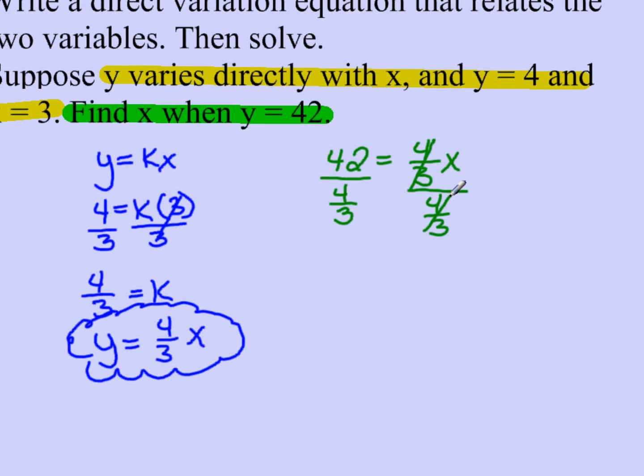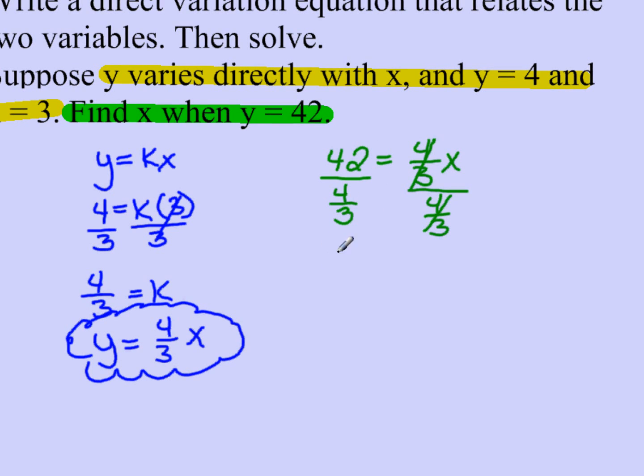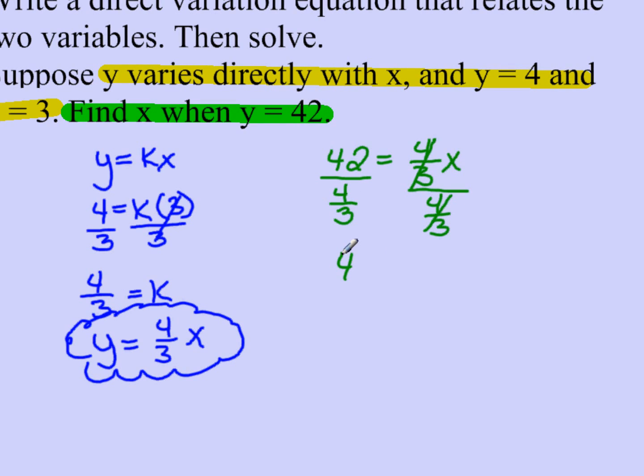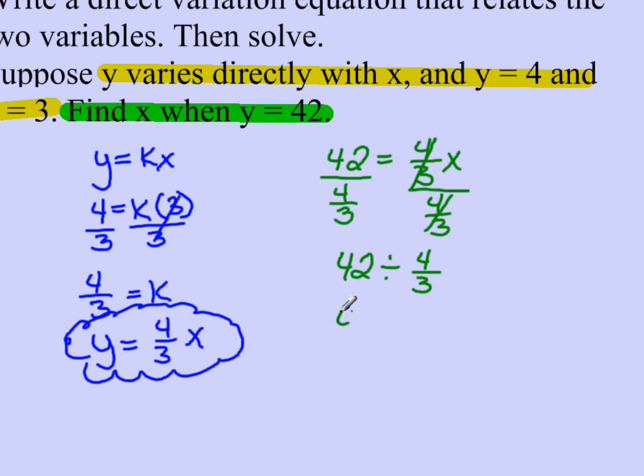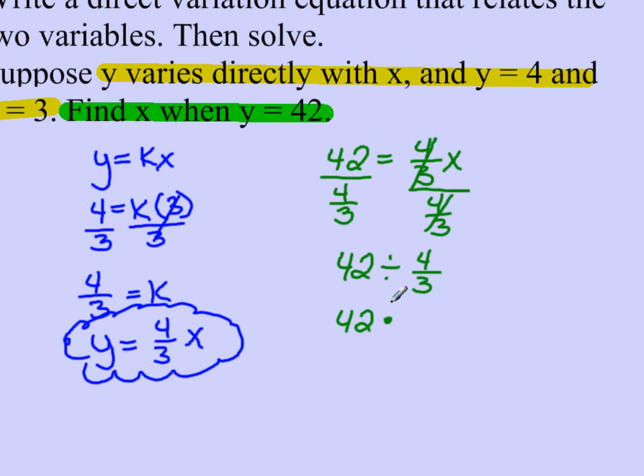Now I have a fraction. I'm dividing with a fraction, so this is where I can rewrite it into a division formula, which is 42 divided by 4 thirds. I'm going to keep the first, change the division to multiplication, and flip the second fraction.